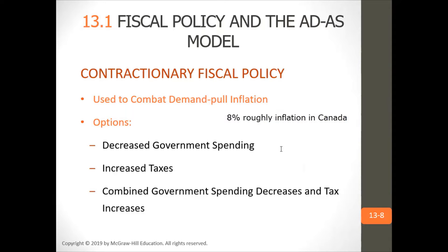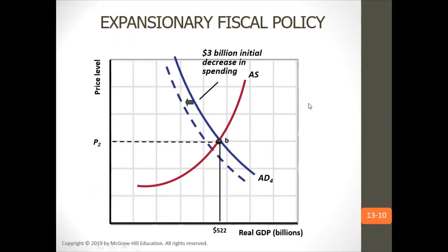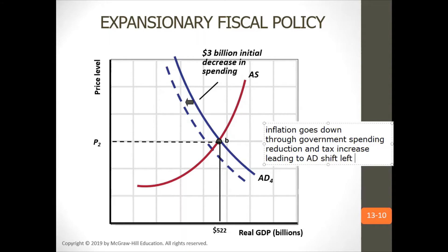What they do to reduce the inflation rate through fiscal policy is reduce government spending and increase taxes. This causes the AD curve to shift left, which causes inflation to go down through government spending reduction and tax increase, leading to an AD shift left and real GDP going down.